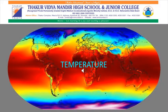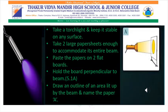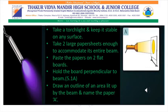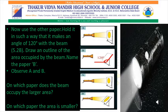Before going through the chapter, let's do one experiment. Take a torchlight and keep it stable in one place. Take two large paper sheets, large enough to accommodate its entire beam. Paste the papers on two flat boards. Then hold the board perpendicular to the beam, that is at 90 degrees. Draw an outline of the area lit up by the beam. Name the paper A.